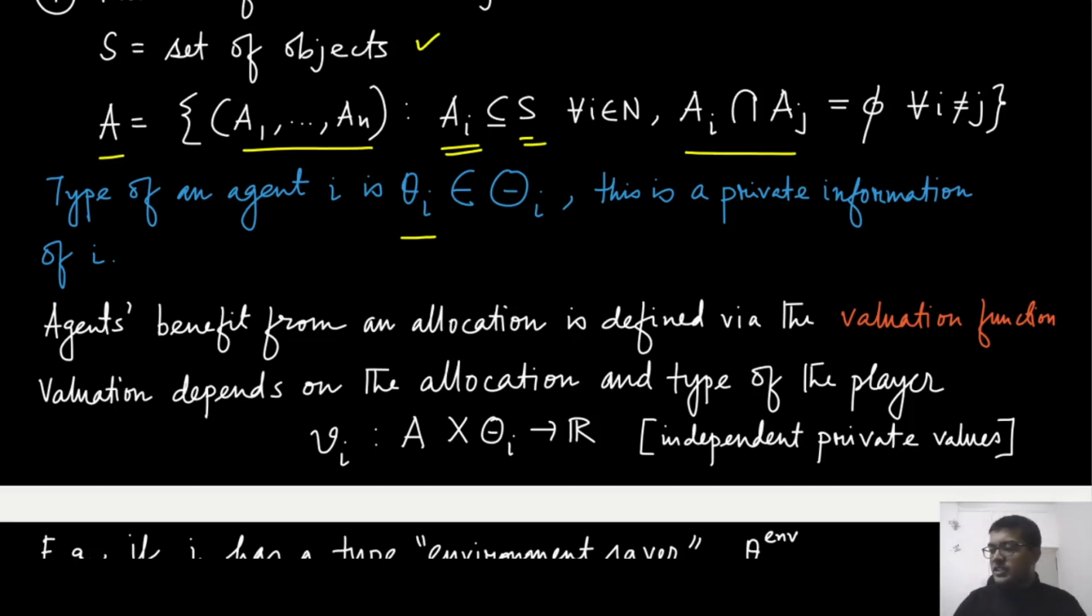And this function takes this as input and gives a real number as the valuation of that player. For player i, the valuation function is mapping the allocation that has been commonly decided along with its type and mapping it to the set of real numbers. Because it depends only on the type of this player, this is called the independent private values and that is what we are going to discuss in this course.